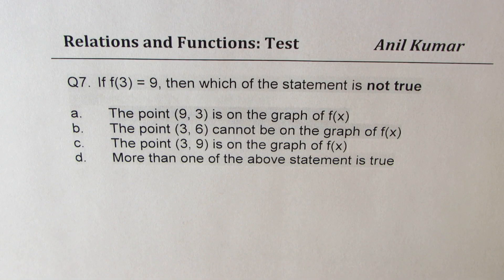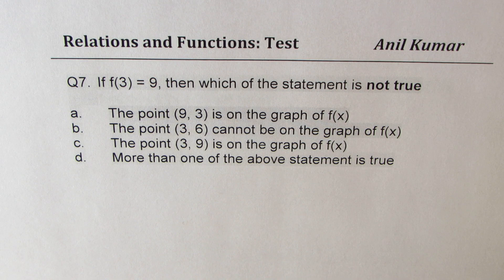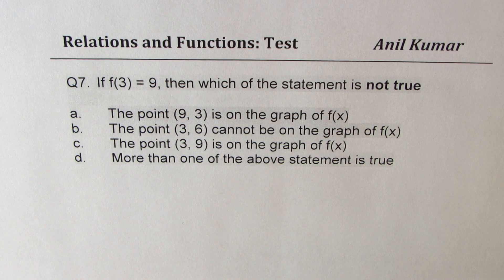Question number seven: if f(3) = 9, which statement is not true? A: the point (9, 3) is on the graph of f(x). B: the point (3, 6) cannot be on the graph of f(x). C: the point (3, 9) is on the graph of f(x). D: more than one of the above statements is true.